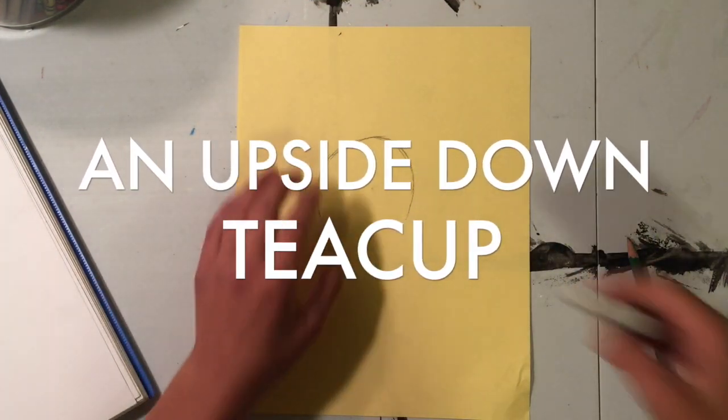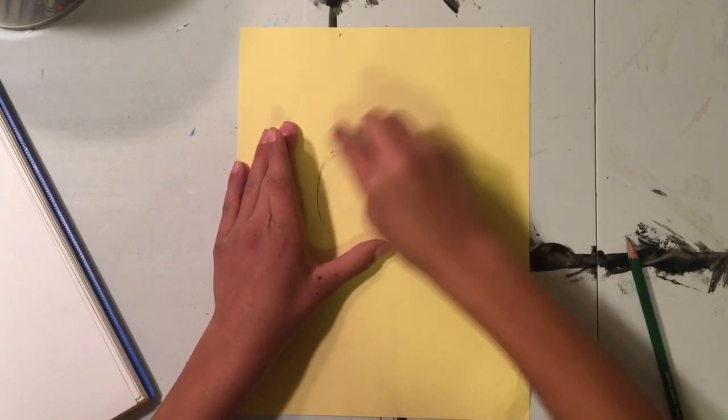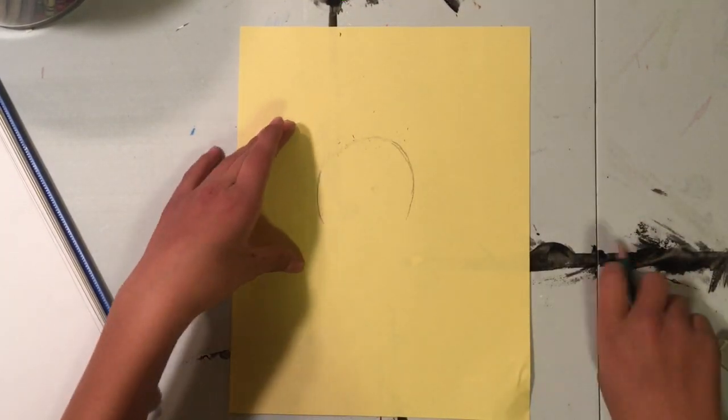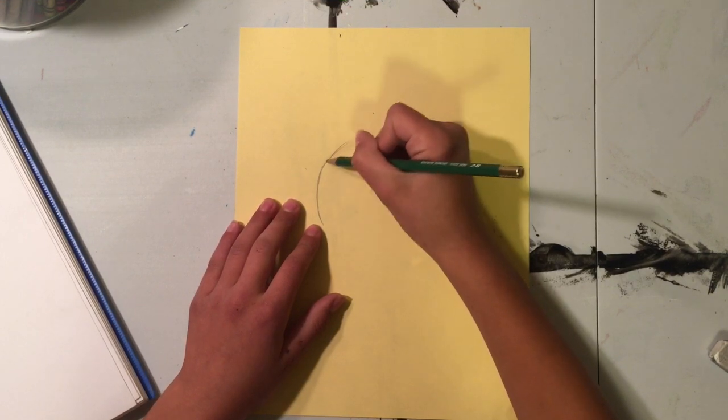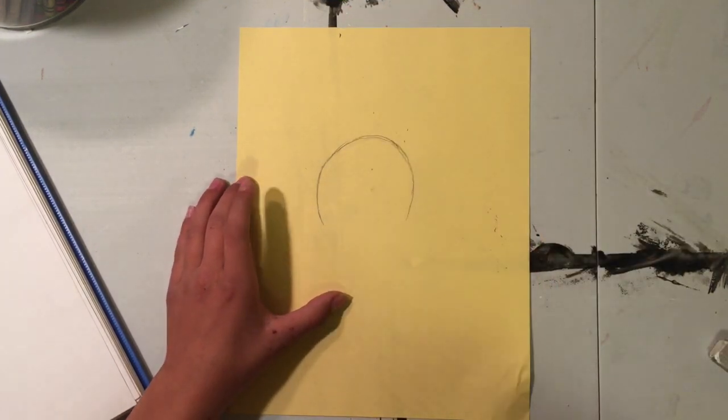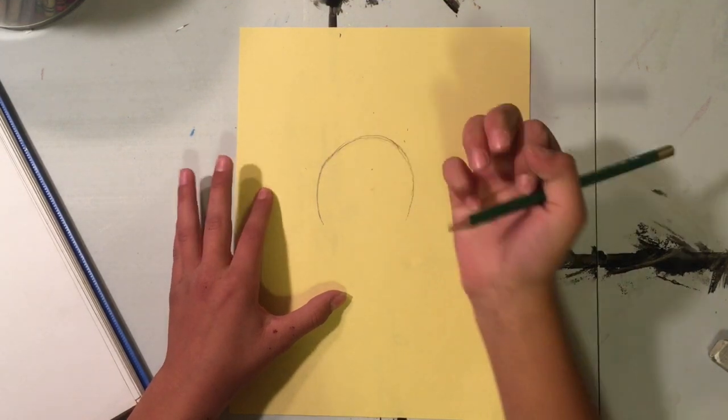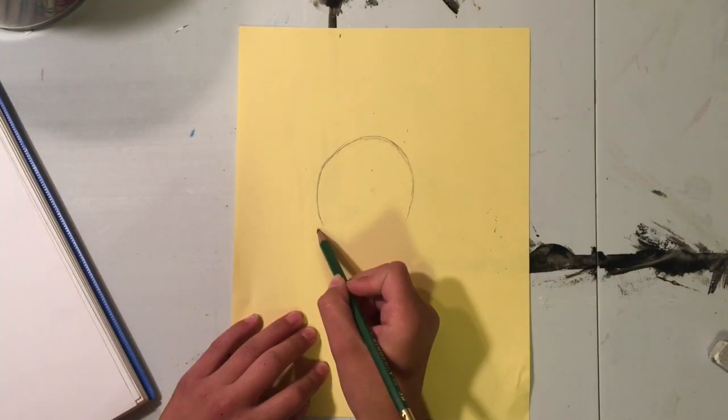All right, so once you have the ice cream cone shape that you like, we're going to start on the bottom of the ice cream. You just want to do like these little bumps. So I just start on both sides and just keep going. I do them in random places at the bottom.